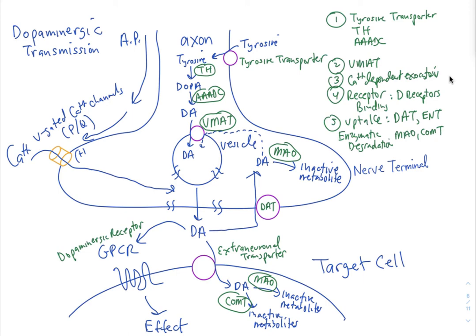To summarize: the tyrosine transporter takes tyrosine in; tyrosine hydroxylase forms DOPA; aromatic amino acid decarboxylase forms dopamine; VMAT takes dopamine into the vesicle; and dopamine is released by calcium-dependent exocytosis. Once dopamine is in the junction, receptor binding occurs through dopaminergic receptors — sometimes denoted 'D' — and they are all GPCRs.